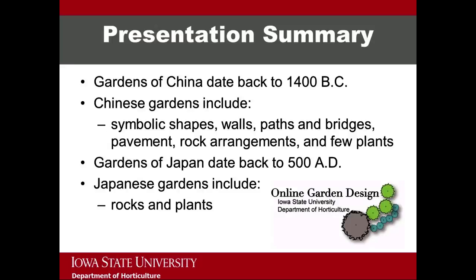This brings me to the conclusion of this presentation on the garden history, ancient China and ancient Japan. In summary, this presentation has highlighted the unique characteristics and features that are linked to the ancient gardens of China and Japan. The gardens of ancient China date back to 1400 BC. These gardens include symbolic shapes, walls, paths and bridges, pavement, rock arrangements, and few plants. Gardens of Japan date back to 500 AD. These gardens include many types of symbolic rocks and stone lanterns and a limited selection of plants.